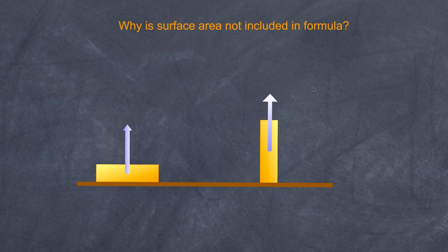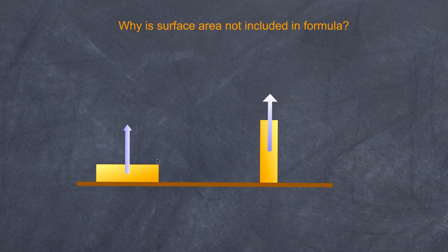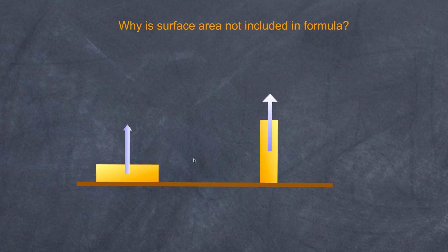Another question often asked: why does surface area not affect friction? If one object has a larger surface area and another has a smaller surface area, the normal force is actually the sum total of all the normal forces for all the particles on the surface. For the larger object, we are spreading the load. For the smaller object, the forces are concentrated in a smaller area, giving greater pressure. So any loss of surface area is balanced by an increase in pressure. For all intents and purposes, the frictional force in both cases is identical.